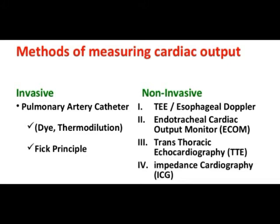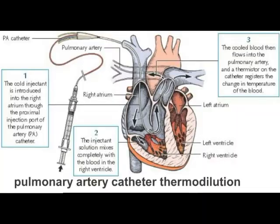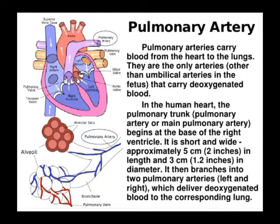Pulmonary artery catheterization is a procedure that uses a long thin tube called a catheter inserted into a pulmonary artery. It can help diagnose and manage a wide variety of health problems. The pulmonary arteries are the two major arteries coming from the right ventricle. The pulmonary arteries carry blood low in oxygen to the lungs, where the blood picks up oxygen and releases carbon dioxide.